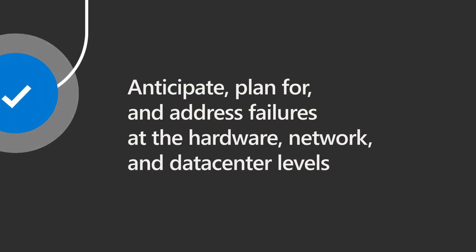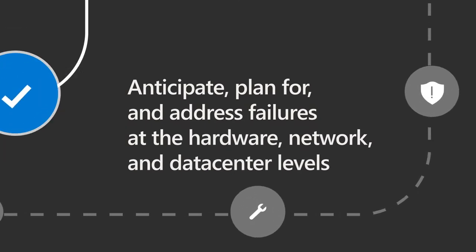We've designed the online services to anticipate, plan for, and address failures at the hardware, network, and data center levels. Having built-in intelligence that addresses failures at the application layer rather than at the data center layer, Microsoft delivers high availability and reliability for Microsoft 365. The data centers operate with high redundancy, and the online services are delivering against the financially-backed service level agreement of 99.9%. This video will walk you through how Microsoft ensures the continuity of its business operations so that it can maintain acceptable levels of service to all our online services customers.